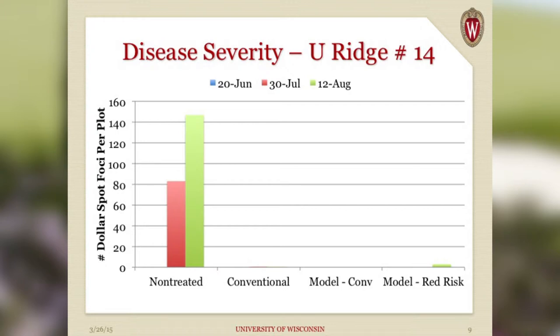The model using conventional fungicides performed extremely well — really no dollar spot on any of those rating dates. The model with reduced risk fungicides showed just a couple of dollar spots appearing in August. This is a program I foresee using on fairways, not putting greens, where we can tolerate a small amount of disease. Using the model and our reduced risk program, we control disease as effectively as the traditional conventional program, using fewer fungicides and less toxic fungicides. In Wisconsin, our primary summer disease is dollar spot, so if we control that, we're doing well.